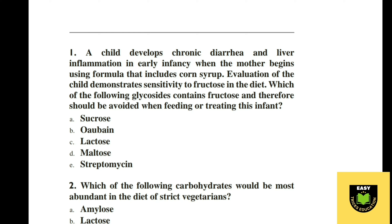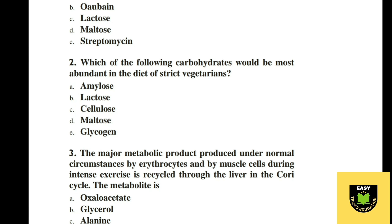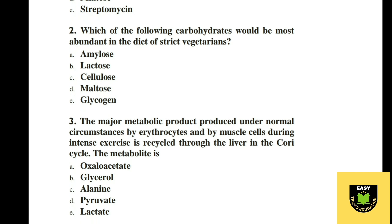Question 1. A child develops chronic diarrhea and liver inflammation in early infancy when the mother begins using formula that includes corn syrup. Evaluation of the child demonstrates sensitivity to fructose in the diet. Which of the following glycosides contains fructose and therefore should be avoided when feeding or treating this infant? The correct option is A, sucrose.